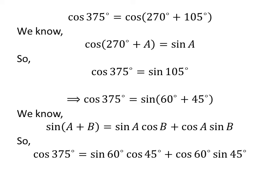Application of the identity gives us: cosine of 375 degrees is equal to sine of 60 degrees times cosine of 45 degrees, plus cosine of 60 degrees times sine of 45 degrees.